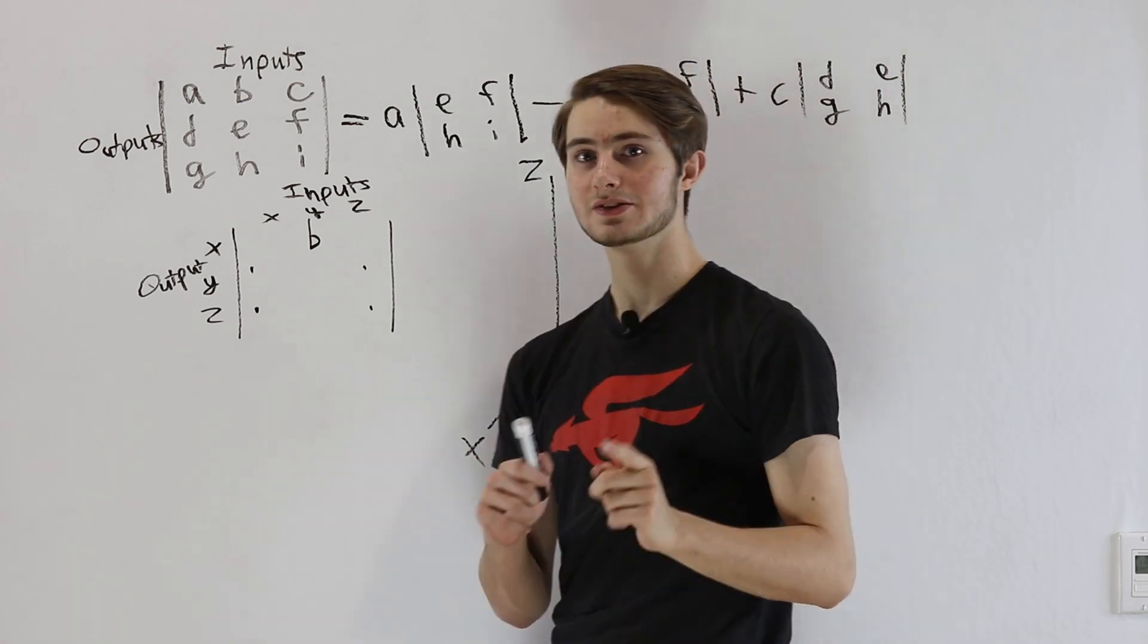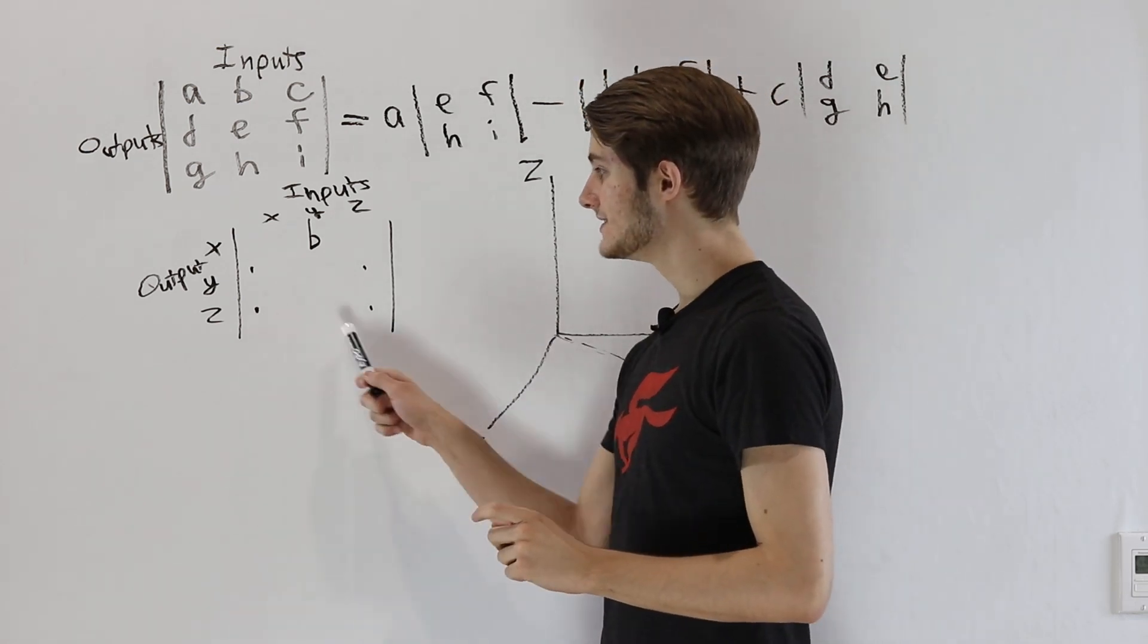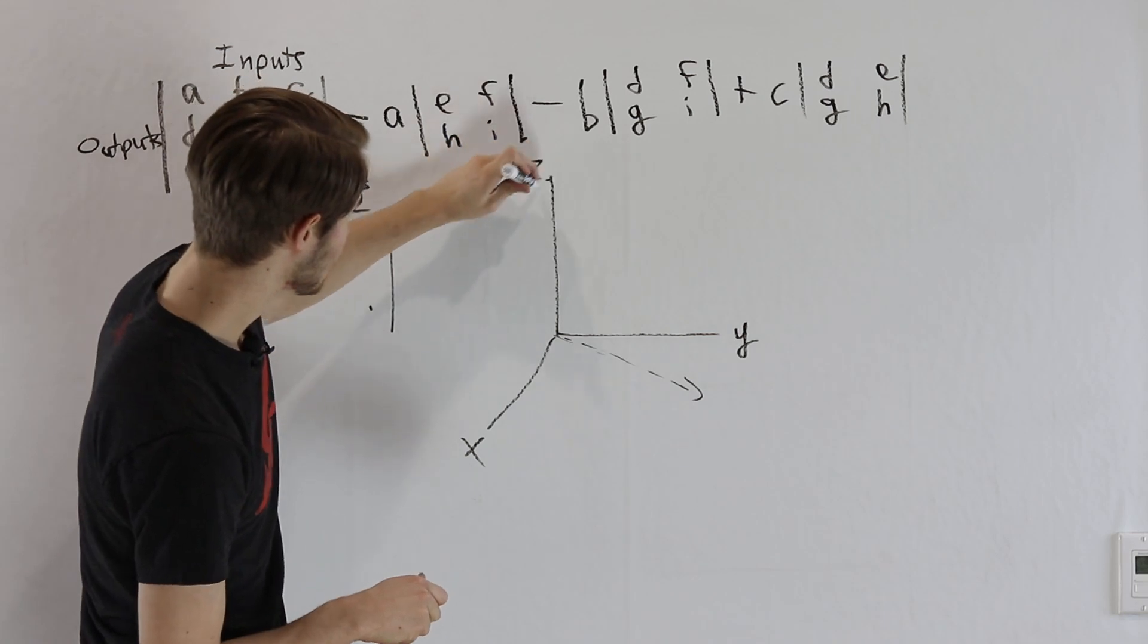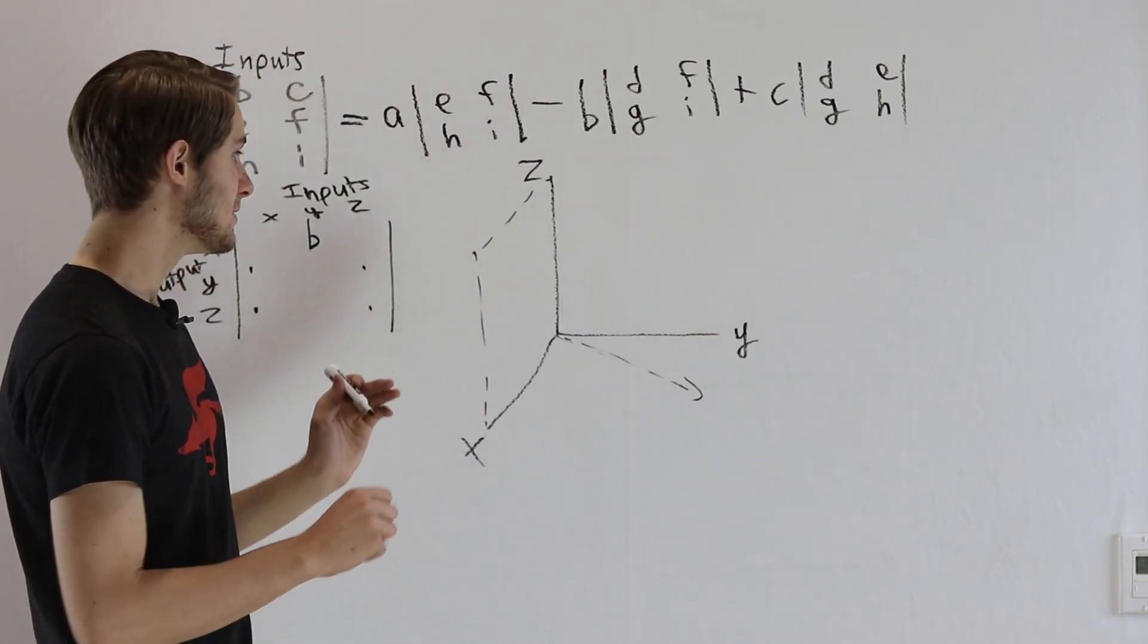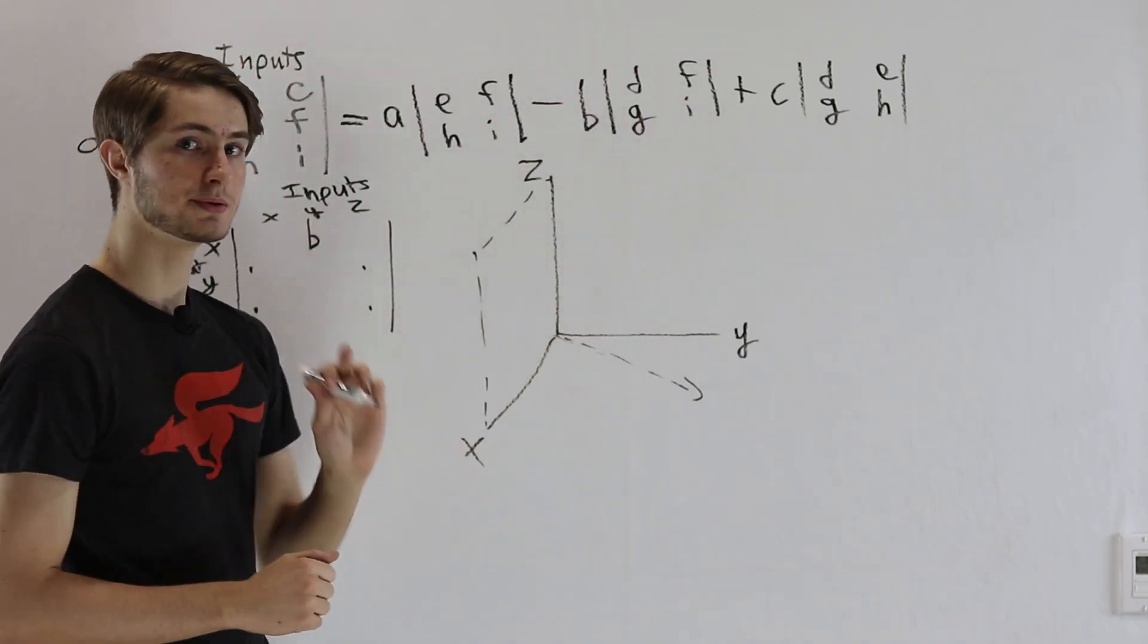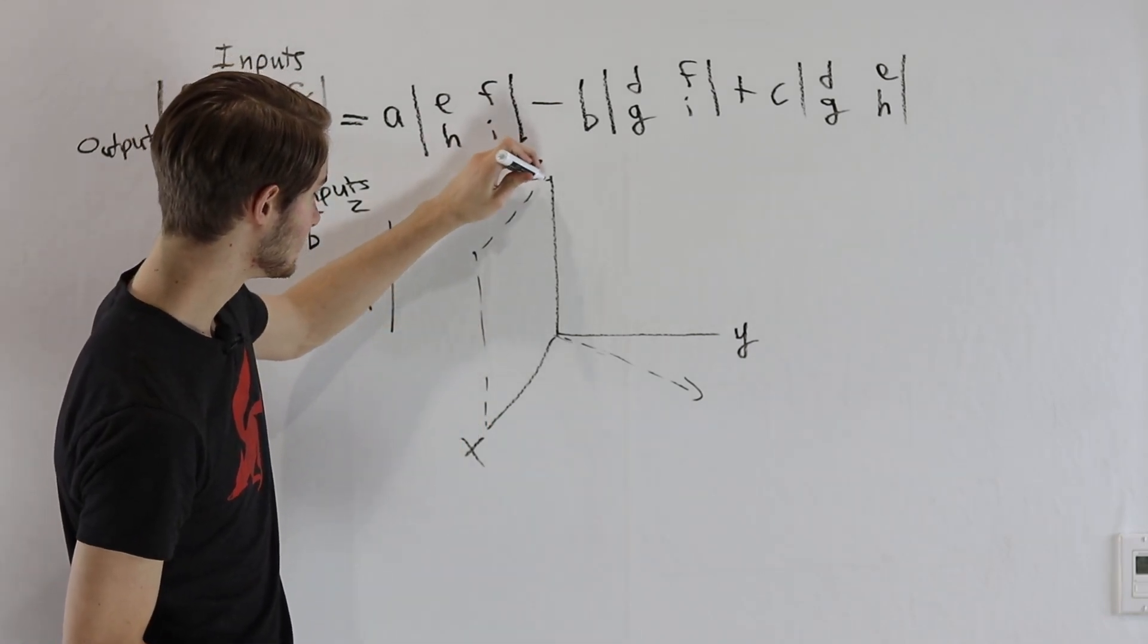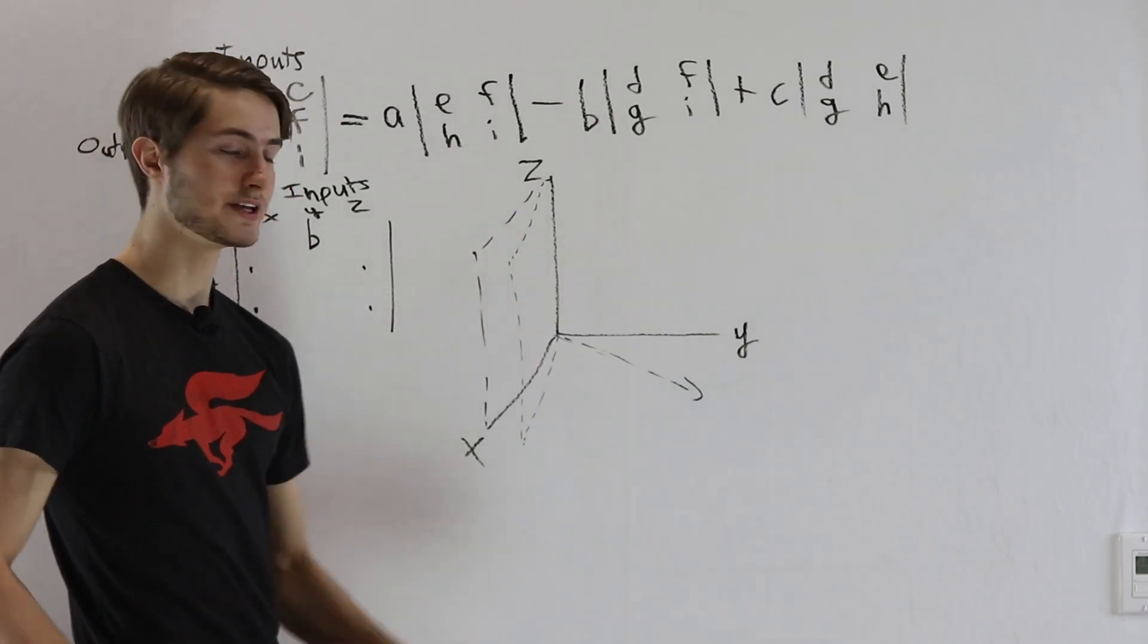But in this case, we're looking at x, z inputs getting mapped to y, z outputs. That's a little bit weird, but let's think about this in terms of planes. We're looking at the x, z plane, which is this plane coming in this direction, right here. And we're thinking about moving it towards the y, z plane. So I'm going to draw a second plane here, and it's going to look like this.